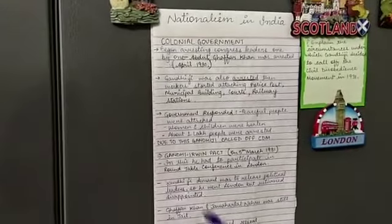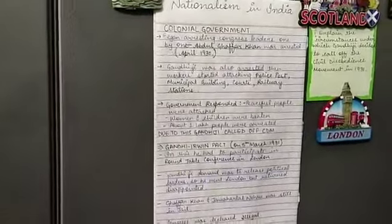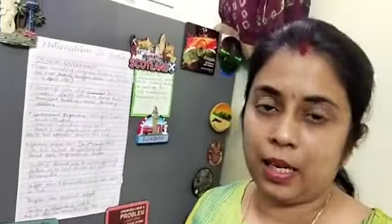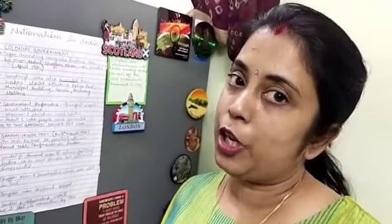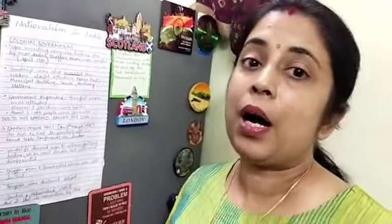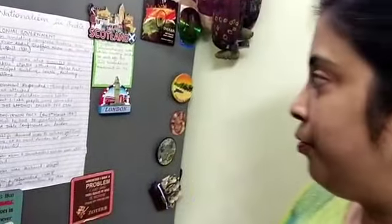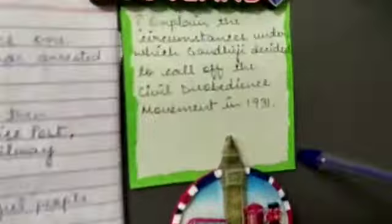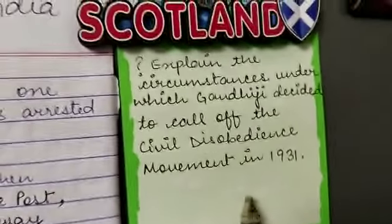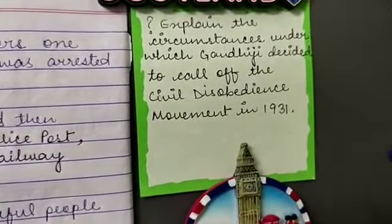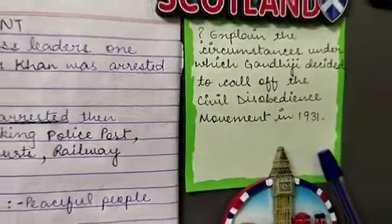This was the reaction of the colonial government and the story of the Gandhi-Irwin Pact. In my next class, I'm going to tell you about how participants saw the movement. Today's homework is: explain the circumstances under which Gandhiji decided to call off the Civil Disobedient Movement in 1931.